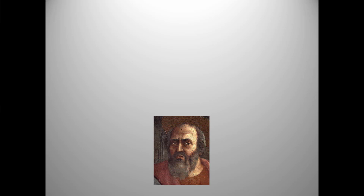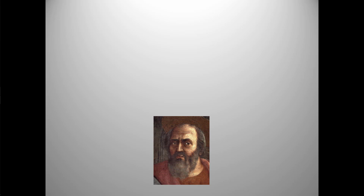The Tribute Money is one of the earliest paintings to employ mathematical perspective. Masaccio was a close friend of Brunelleschi's, and he knew his studies of perspective very well. Note how the orthogonals converge on Christ's head. And as this close-up of one of the faces reveals, Masaccio also made more use of contrasts of light and dark to define volume and space.